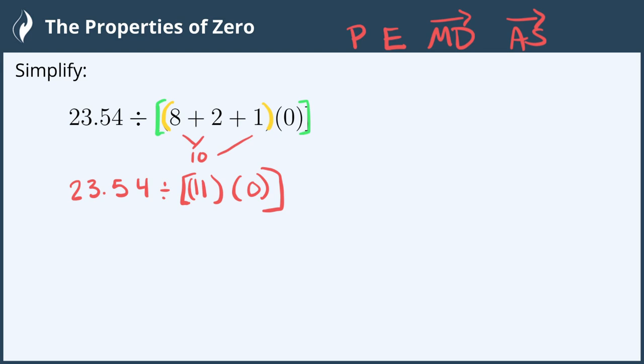Now that we've done the inside parentheses, we can go ahead and move forward with the brackets. Inside this, we have 11 times 0. 11 times 0 is 0. Then we copy everything down.